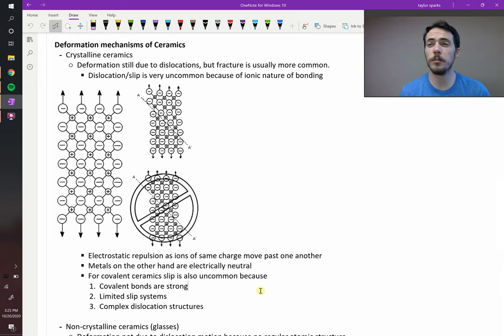All right, let's talk about deformation mechanisms in ceramics. In metals, it was pretty straightforward. You had slipping, you had twinning. So can this also happen in ceramics? Sure.